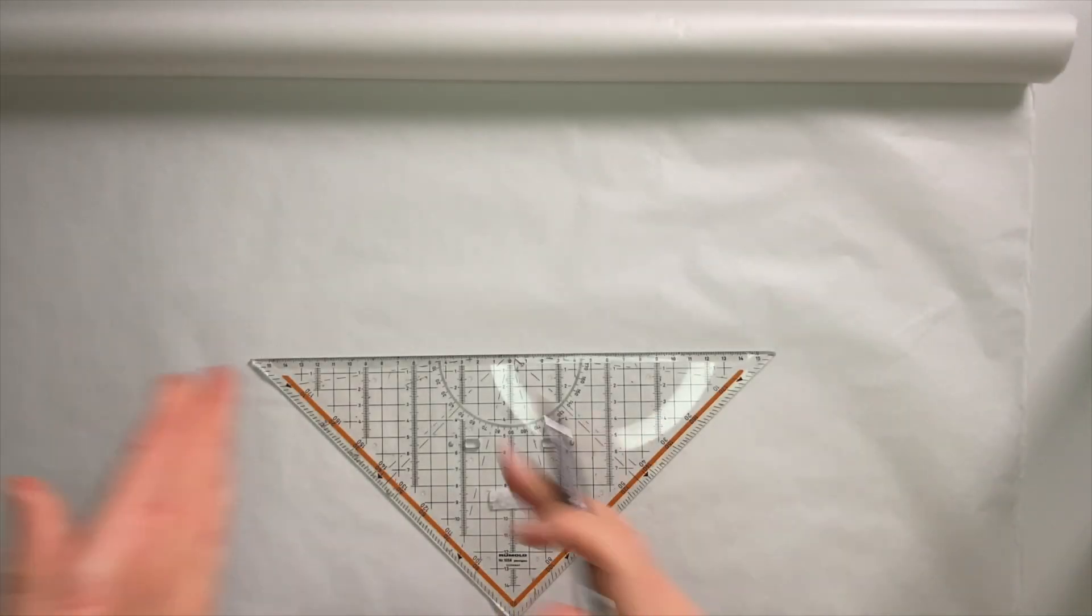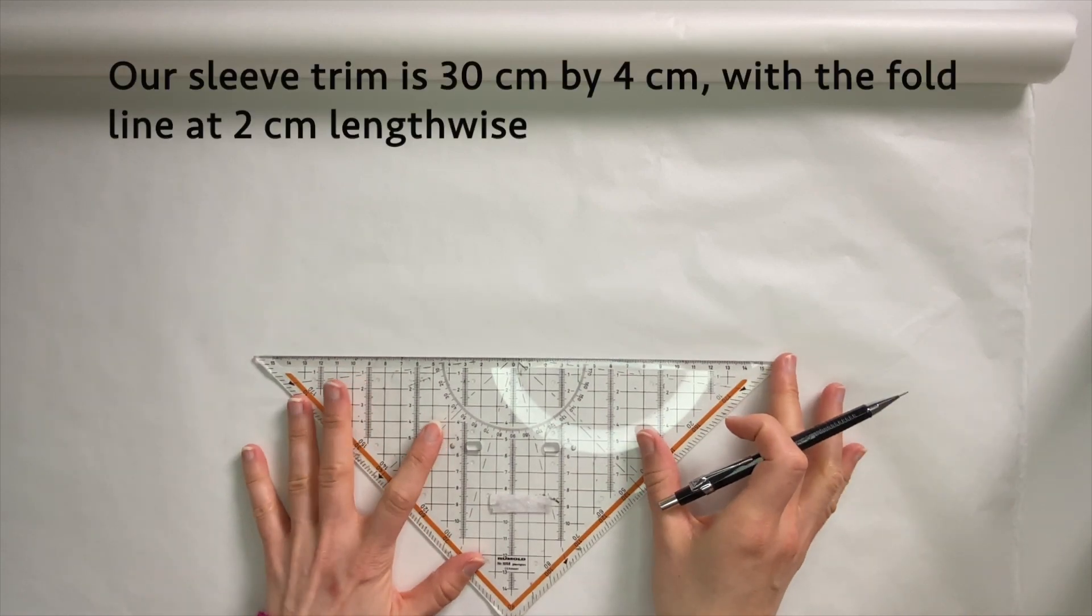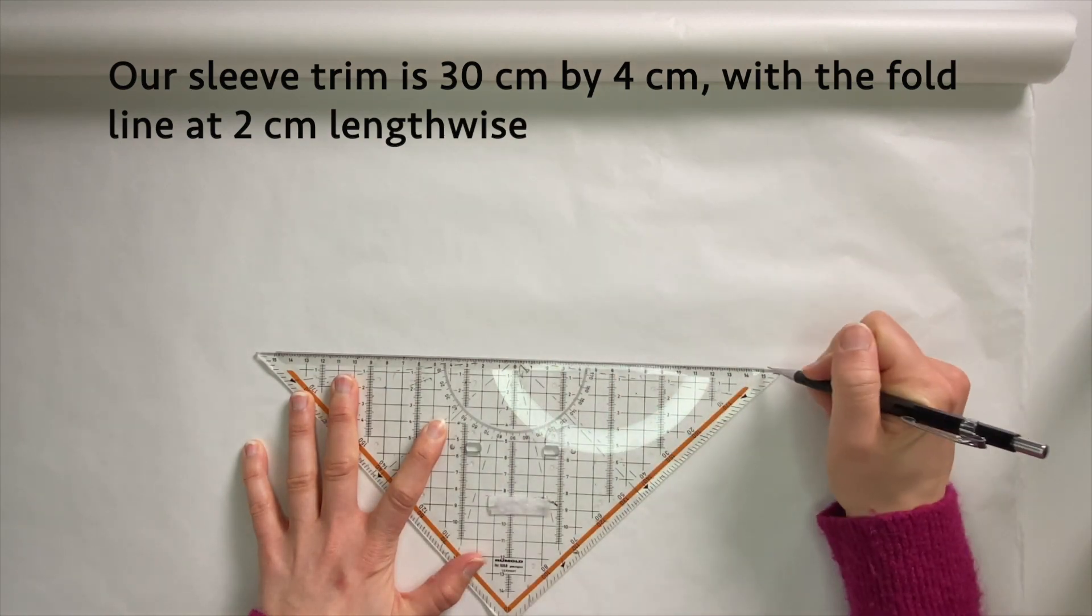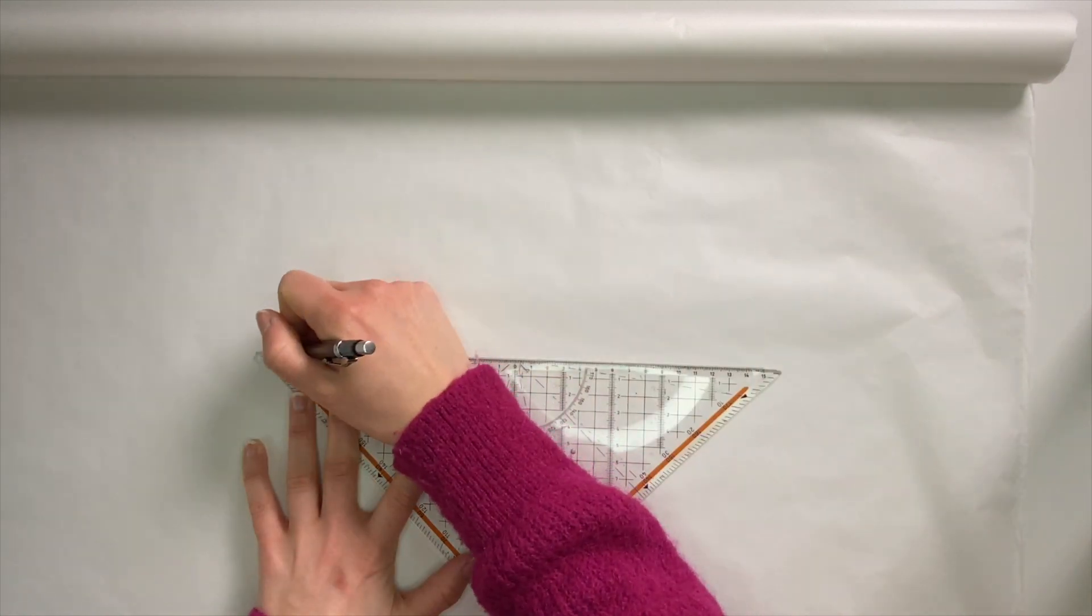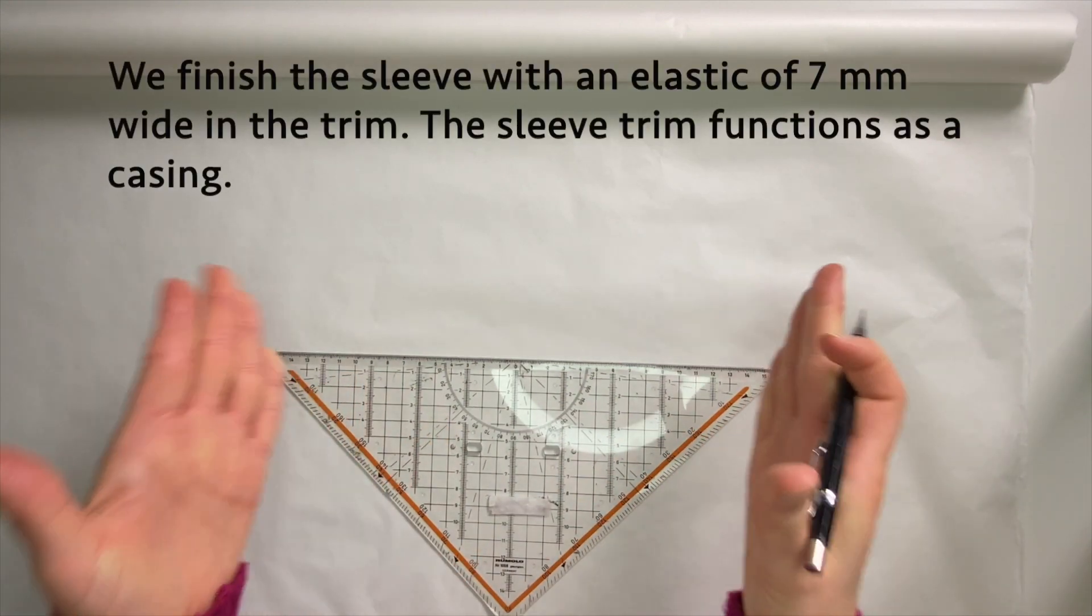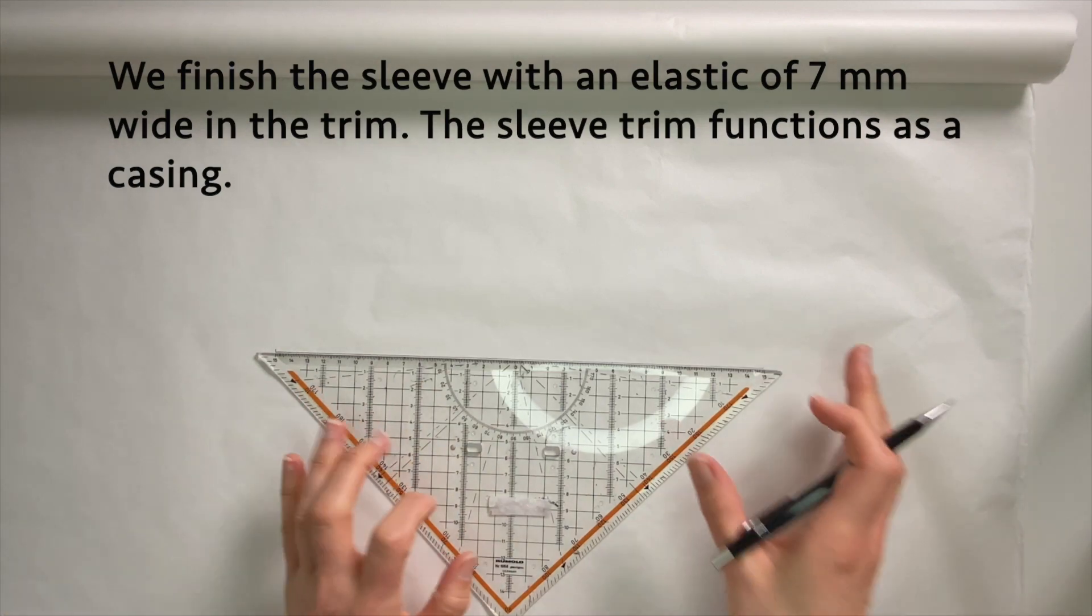The sleeve trim has the same length as the hem of our sleeve, so we're gonna draw a line of 30 centimeters. The way we finished it is with an elastic in the sleeve trim, so that's why it's the same length. You can always finish it different if you want, of course.